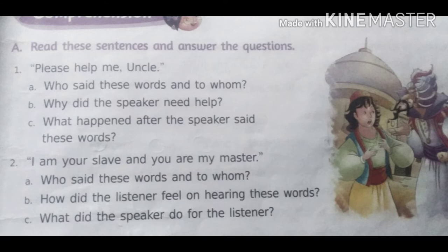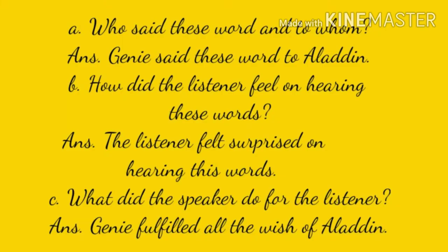The next line is 'I am your slave and you are my master.' The questions related to this line are: who said this word to whom? How did the listener feel on hearing this word? And what did the speaker do for the listener? The answer to the first question: Ginny said this word to Aladdin.